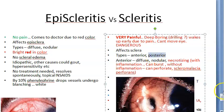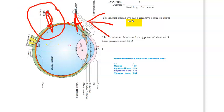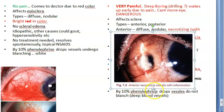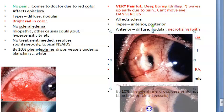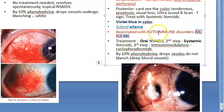Posterior scleritis affects the posterior part of the sclera. The classification is anterior — including diffuse, nodular, and necrotizing — and posterior, based on the insertion of the rectus muscles. Scleritis appears violet-blue in color, unlike the bright red of episcleritis. There is scleral edema present. Scleritis is associated with autoimmune conditions such as rheumatoid arthritis and systemic lupus erythematosus.